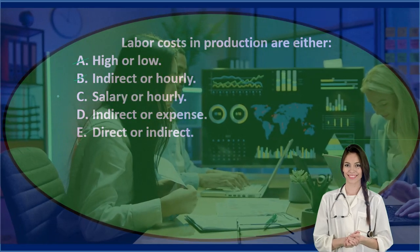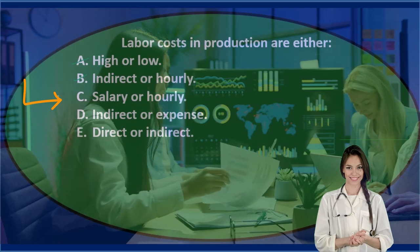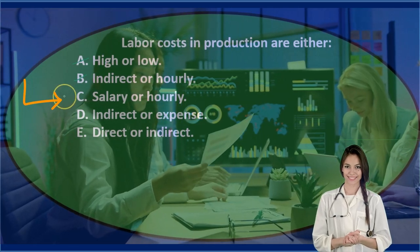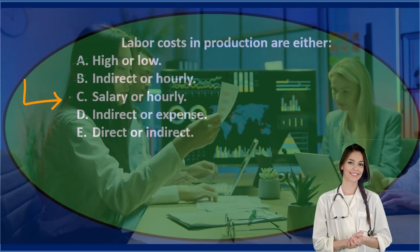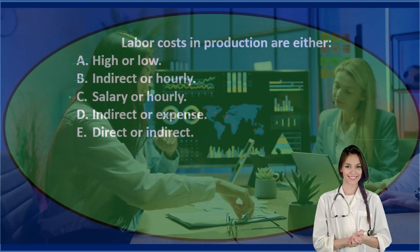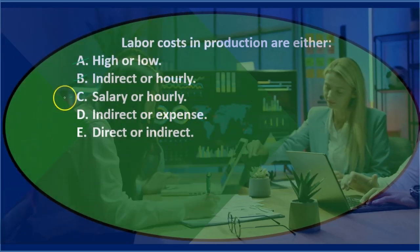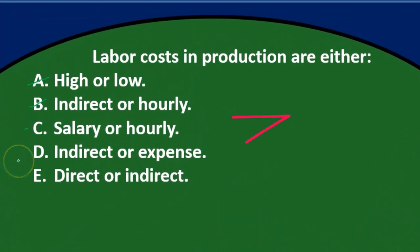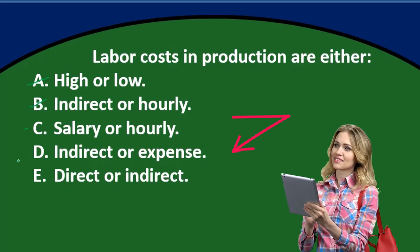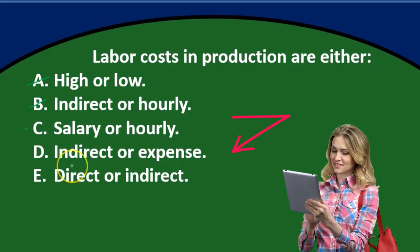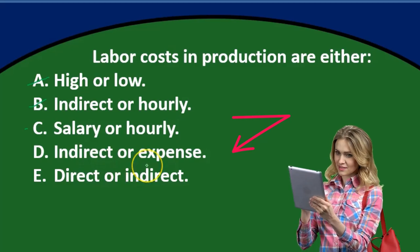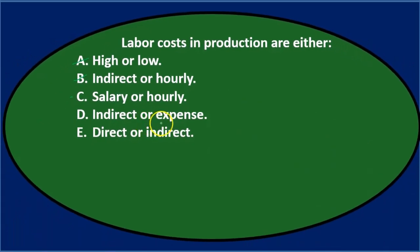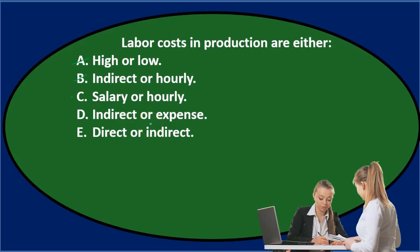Option C says salary or hourly, and those are two payroll items that seem to go together. How else do we pay people — either hourly or salary? So that could be it. Option D says indirect or expense, but those two don't seem to exactly go together either. So I don't think it's D.